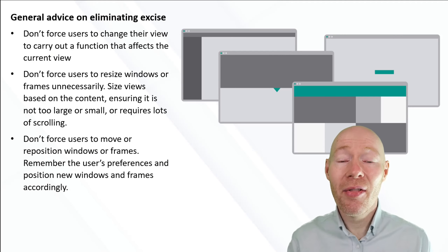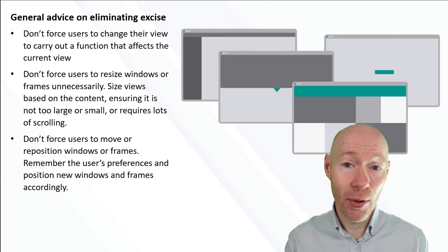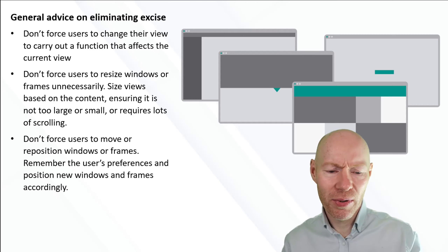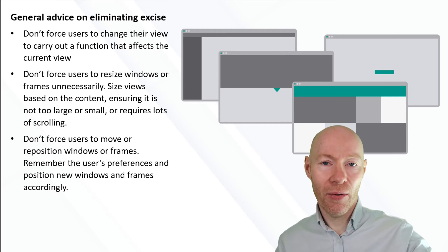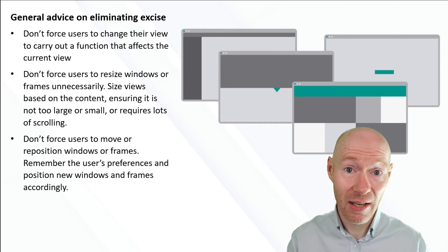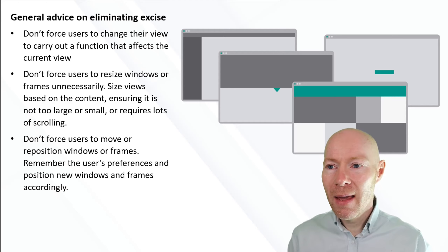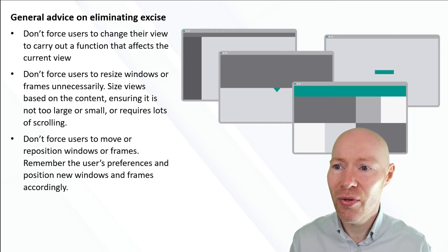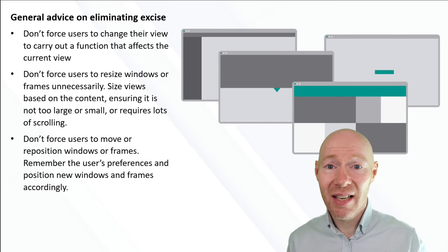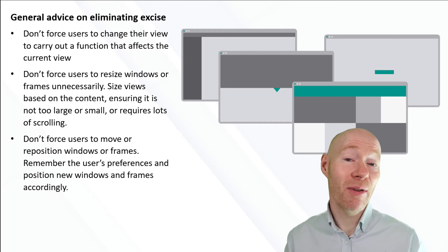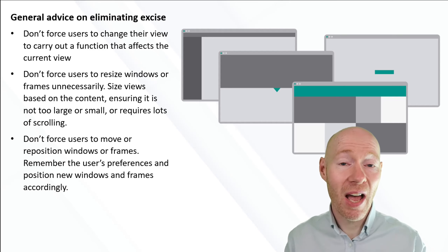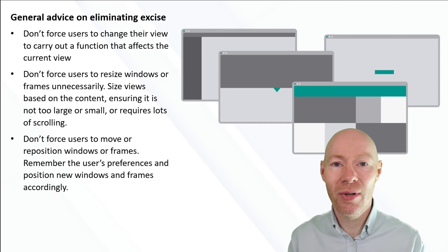Some general practical advice: don't force users to change their view to carry out a function that affects the current view. If users are doing something on a particular screen and they also want to do something related to it, but it requires them to go to another screen and come back, that's something to avoid — do everything on that particular view. If we are displaying new information, we don't want to force users to resize windows or frames. If something is always displayed and users always resize it every time, that's unnecessary work. The application should put in the thought to work out what information to display, how much space is available, what the user expects, and size things accordingly. Through user testing you can evaluate and refine these aspects.